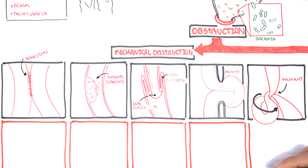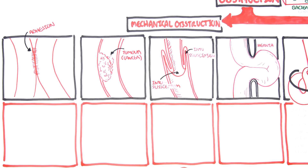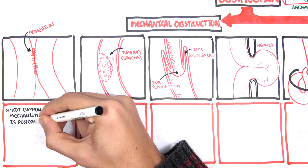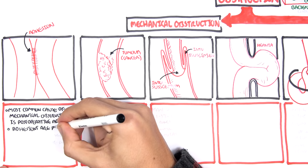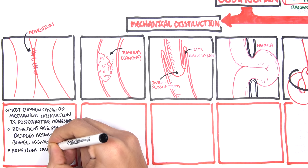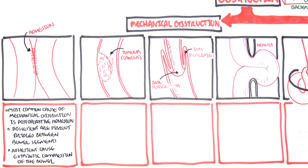Now let's look at each of these five types in a bit more detail. The most common cause of mechanical obstruction is post-operative adhesion — when you have surgery of the abdominal cavity, opening it can cause fibrous adhesions to form between segments of the bowel. Adhesions are fibrous bridges between bowel segments that cause extrinsic compression of the bowel, which can thus lead to obstruction.